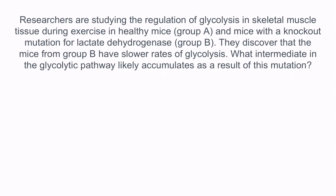Researchers are studying the regulation of glycolysis in skeletal muscle tissue during exercise in healthy mice, which are group A, and mice with a knockout mutation for lactate dehydrogenase, which are group B. They discover that the mice from group B have slower rates of glycolysis. What intermediate in the glycolytic pathway likely accumulates as a result of this mutation? Mice from group A are healthy, and mice from group B have a lactate dehydrogenase deficiency. We're asked how this would affect the glycolytic pathway and what substrate would likely accumulate.